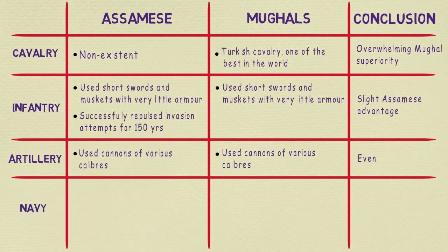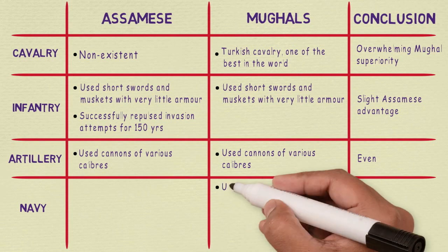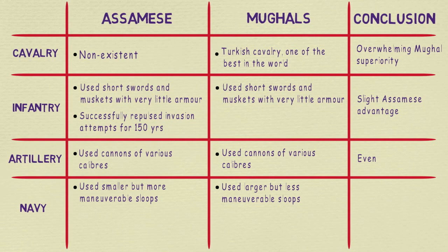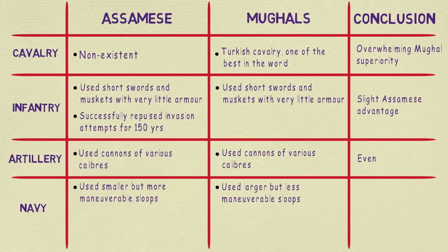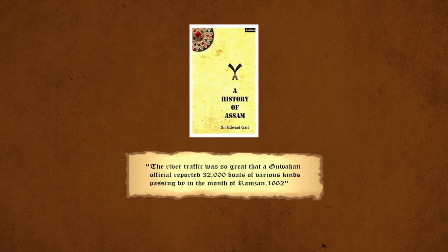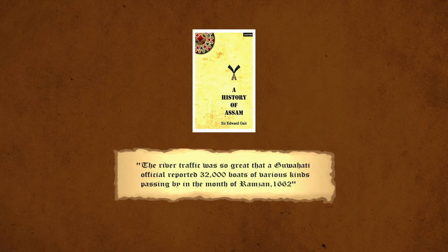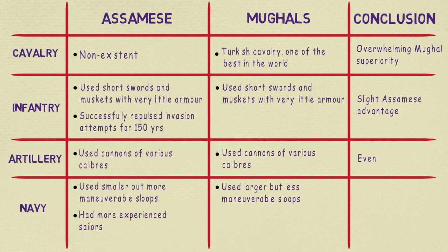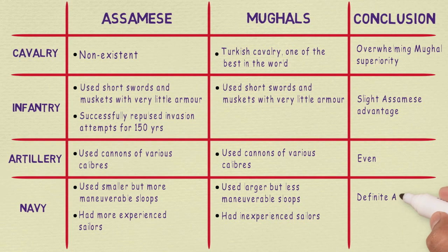Finally, coming to the Navy: both forces had sizeable riverine navies, but they belonged to two opposing schools of thought. While the Mughal war sloops were quite large — an average length of 150 feet carrying 16 to 20 cannons — the Assamese sloops were only 60 feet in length and carried half the number of cannons, but were much more maneuverable. As per A History of Assam by Sir Edward Gait, river traffic was so great that a Guwahati official reported 32,000 boats passing by in one month of 1662. The Mughal war sloops were mostly manned by Dutch and Portuguese mercenaries not accustomed to navigating varying currents of a river like the Brahmaputra, so the Assamese had a clear advantage here.